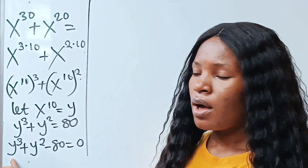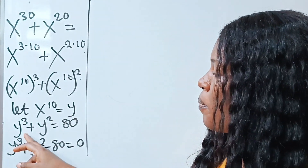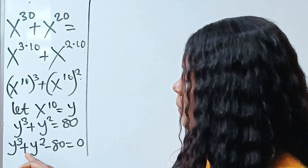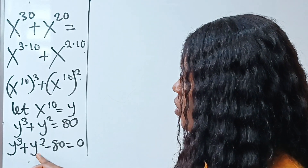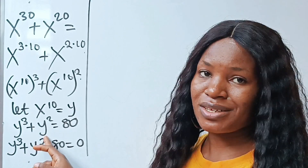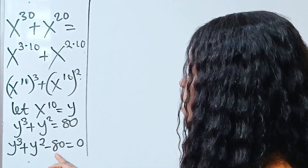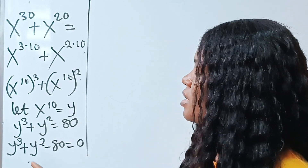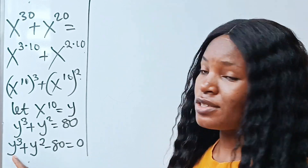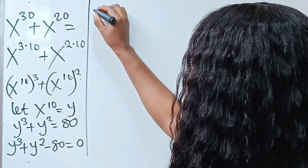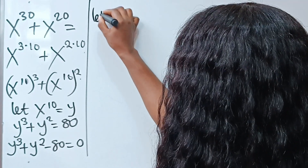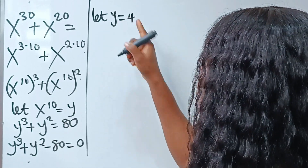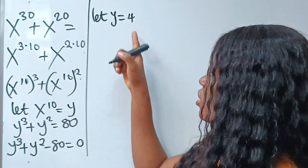We try y = 4: 4 to the power of 3 gives us 64, and 64 plus 4 squared, which is 16, is 80, and 80 minus 80 equals zero. So y equals 4 satisfies the equation. We are now going to use this 4 to divide synthetically.